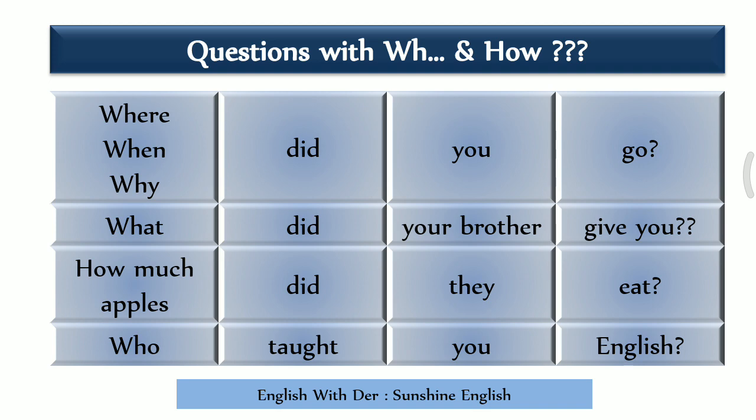For WH-questions, the structure is: WH-word + did + subject + base form of verb. Examples: 'Where did you go?' 'When did you go?' 'Why did you go?' 'What did your brother give you?' 'How many apples did they eat?' 'Who teaches English to you?' — these are WH-question forms in simple past tense.